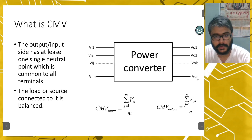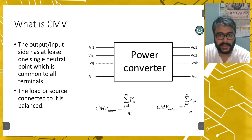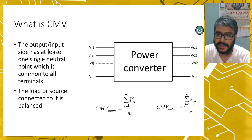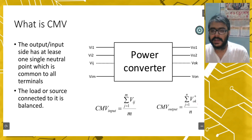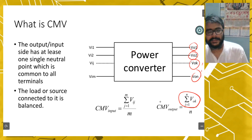The common mode voltage or CMV at the input side is the summation of all the input terminal voltages divided by the number of terminals, that is M. And the output side CMV is the summation of all the output voltages divided by the number of terminals N. So, this is what common mode voltage is.